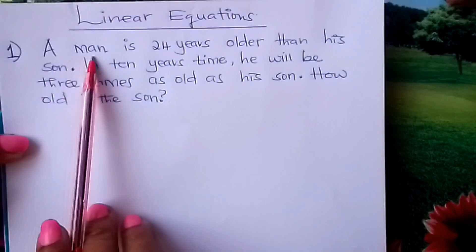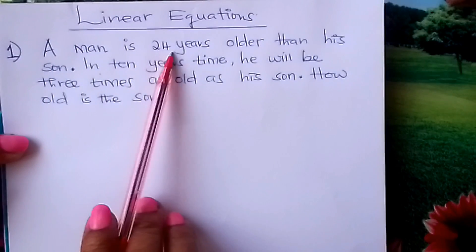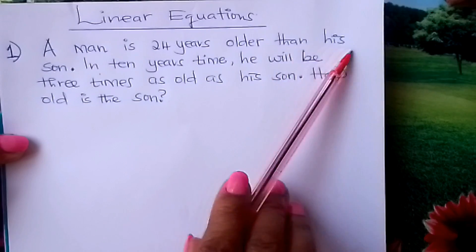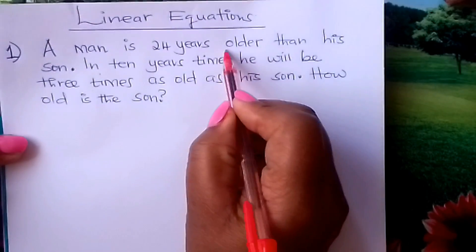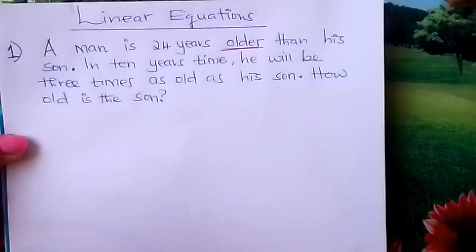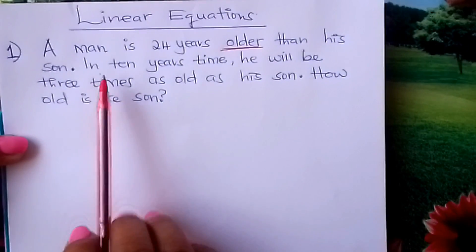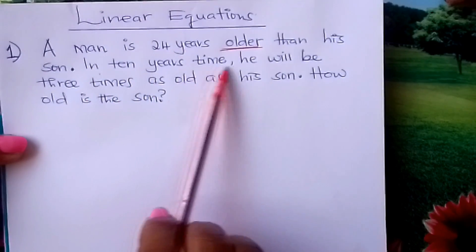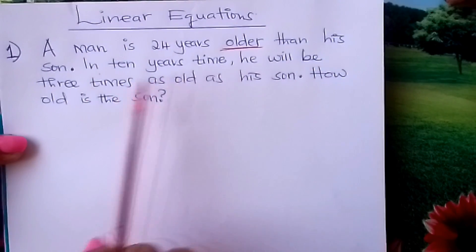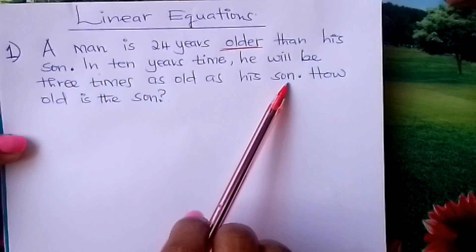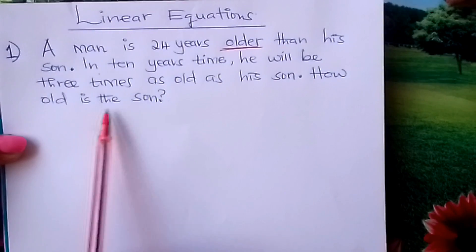You are told that a man is 24 years older than his son. Then in 10 years' time, he will be 3 times as old as his son. How old is the son?